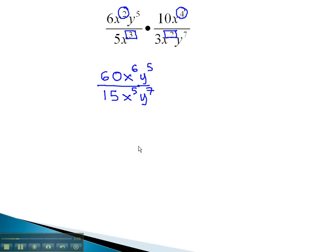Now, we can look at reducing this fraction by dividing out common factors. 60 and 15 are both divisible by 15. 15 goes into 60 four times and into 15 once.